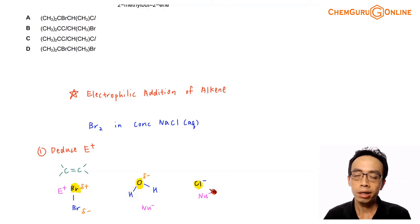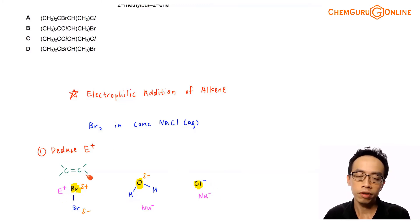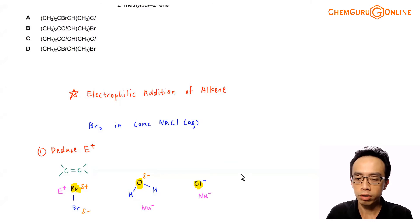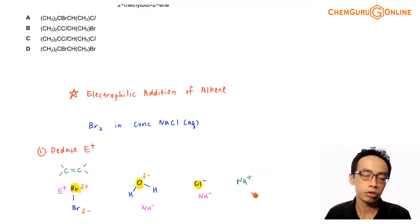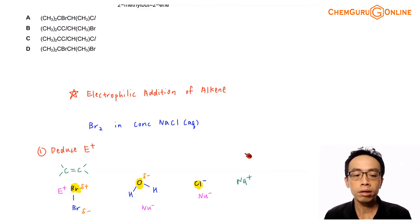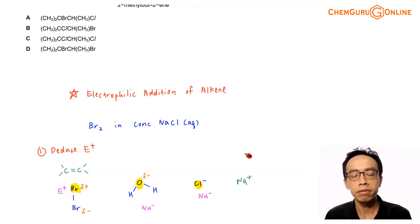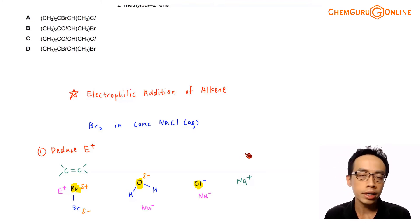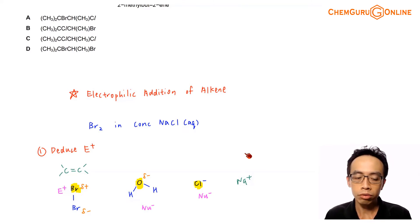Cl⁻ is similarly absolutely negatively charged, so it is considered a nucleophile and cannot react with the alkene in the first step. Na⁺ is positively charged but is very stable, so it will just stay as Na⁺ and will not function as an electrophile. An electrophile tends to be a positive species, but it also has to be reactive. Na⁺ is positive but very stable, so we can safely ignore it. We have therefore deduced that the electrophile is bromine.